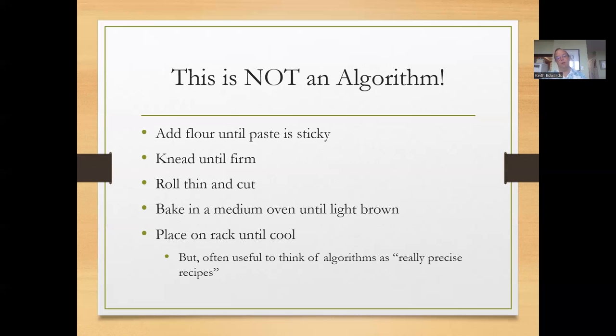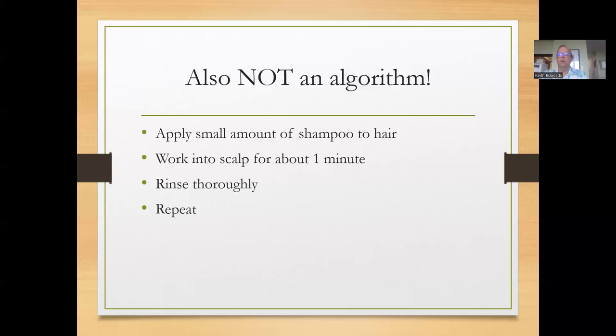Right here, this one's also not an algorithm. This one you may have seen on the back of a shampoo bottle. Apply a small amount of shampoo to hair, work in the scalp for about one minute, rinse thoroughly, and repeat. This one's probably even worse because you have lack of specificity, what's a small amount, what is thoroughly, but this one also repeats and doesn't tell you when it's going to terminate. So this one might fall under computational method for cleaning your hair, but I don't think you'll ever finish up because there's no condition that allows us to terminate this method.